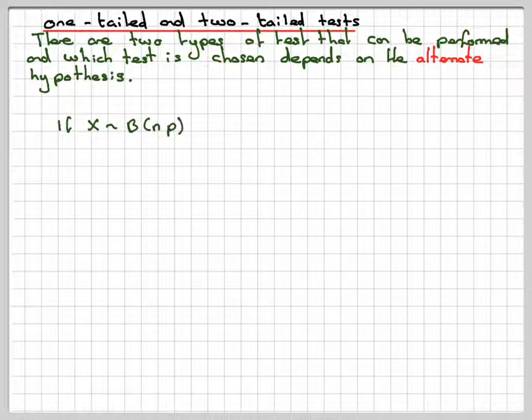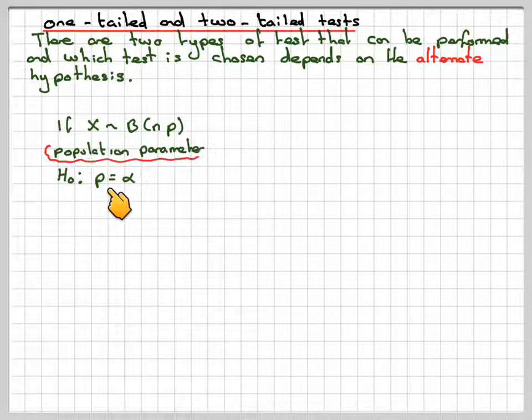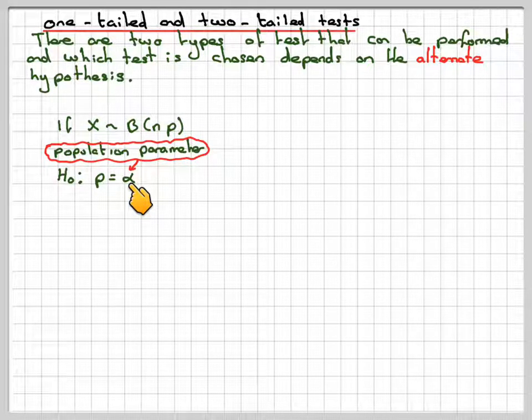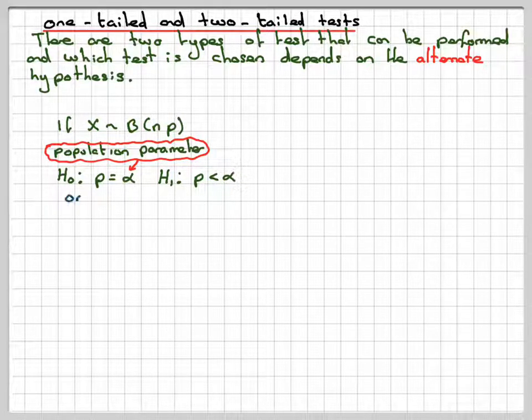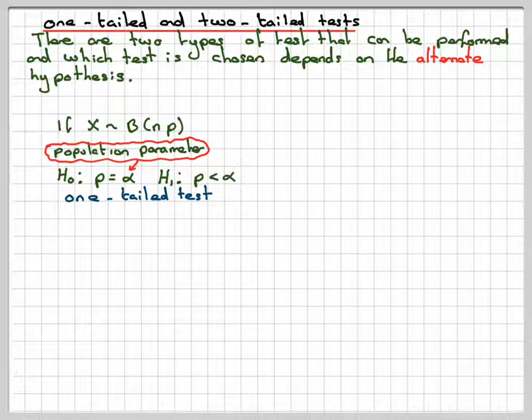So if we have X is binomial B(n,p) and I have H0: P is equal to some population parameter. In my example, I use 0.4. Then my alternative hypothesis could be that P is less than 0.4, and this would be a one-tailed test. So I'm looking for a definite decrease here.